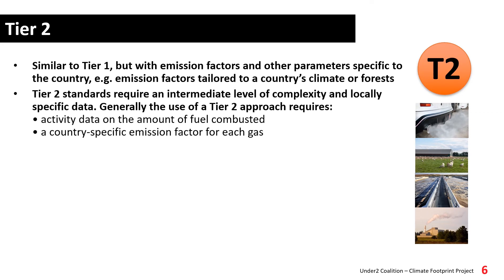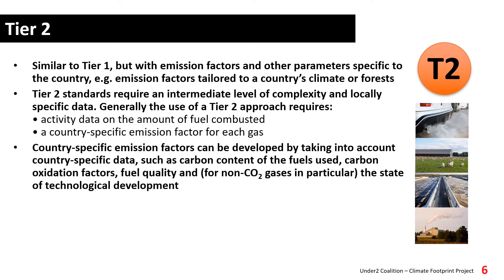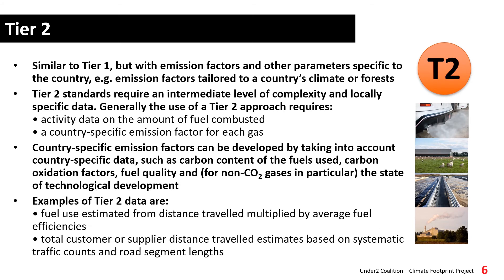For this reason, tier 2 standards require an intermediate level of complexity and locally specific data. Generally, the use of a tier 2 approach requires activity data on the amount of fuel combusted and a country-specific emission factor. A country-specific emission factor can be developed by taking into account data specific to that country, such as the carbon content of the fuels used, carbon oxidation factors, fuel quality, and the state of technological development. Examples of tier 2 data may include fuel use estimated from distance travelled multiplied by average fuel efficiencies, or an estimation of total distance travelled based on traffic counts and road segment lengths.